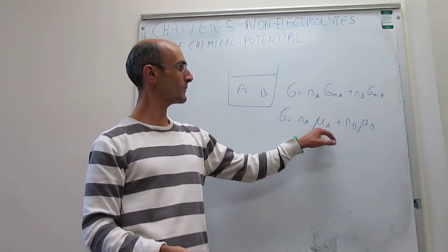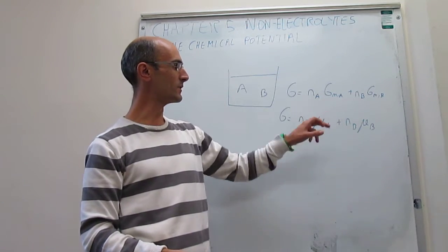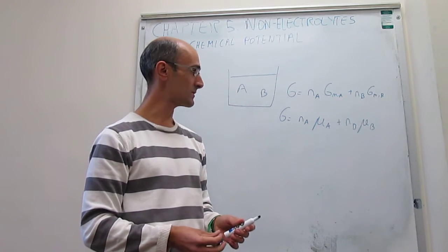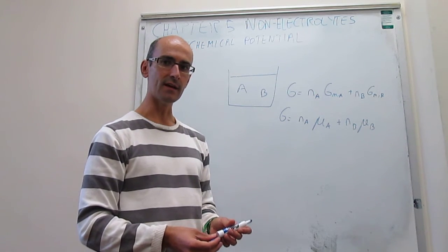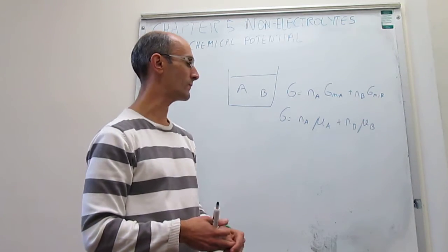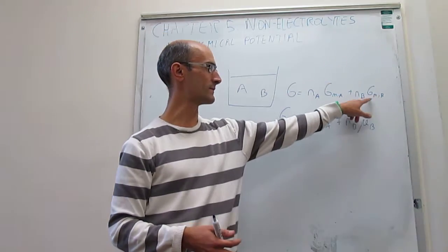And that is the definition of chemical potential. This is just a Greek letter mu. That is simply the molar Gibbs energy of a substance at a particular set of conditions. And this chemical potential is going to be with us until the end of thermodynamics, so it's quite important that you remember where it comes from.